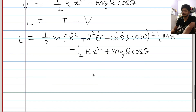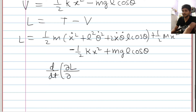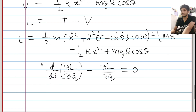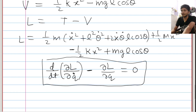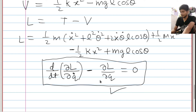Using this Lagrangian, you can apply the Euler-Lagrange equation: d/dt (∂L/∂q-dot) − ∂L/∂q = 0. Apply this with respect to x and with respect to theta to get the equations of motion. That was all from my side for today — thanks for watching and I'll see you in the next one.